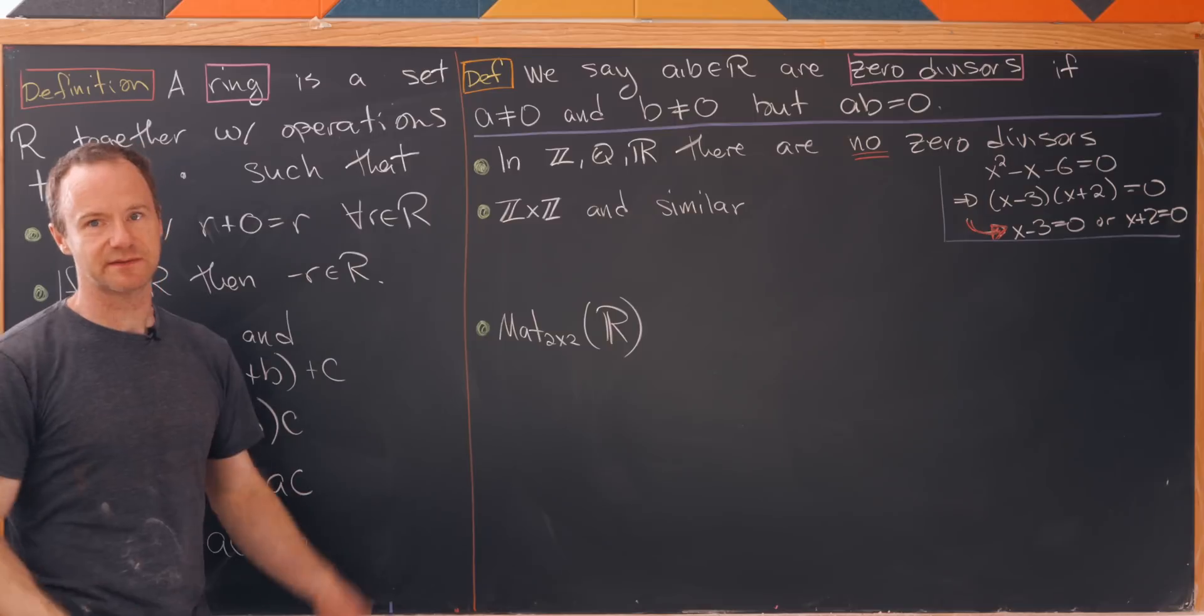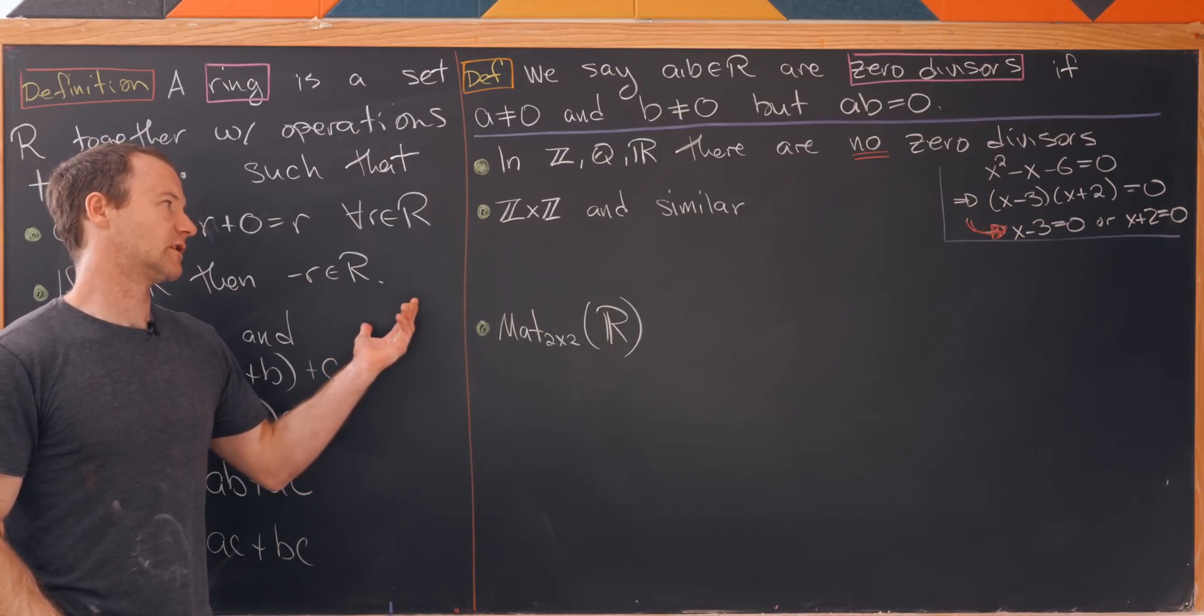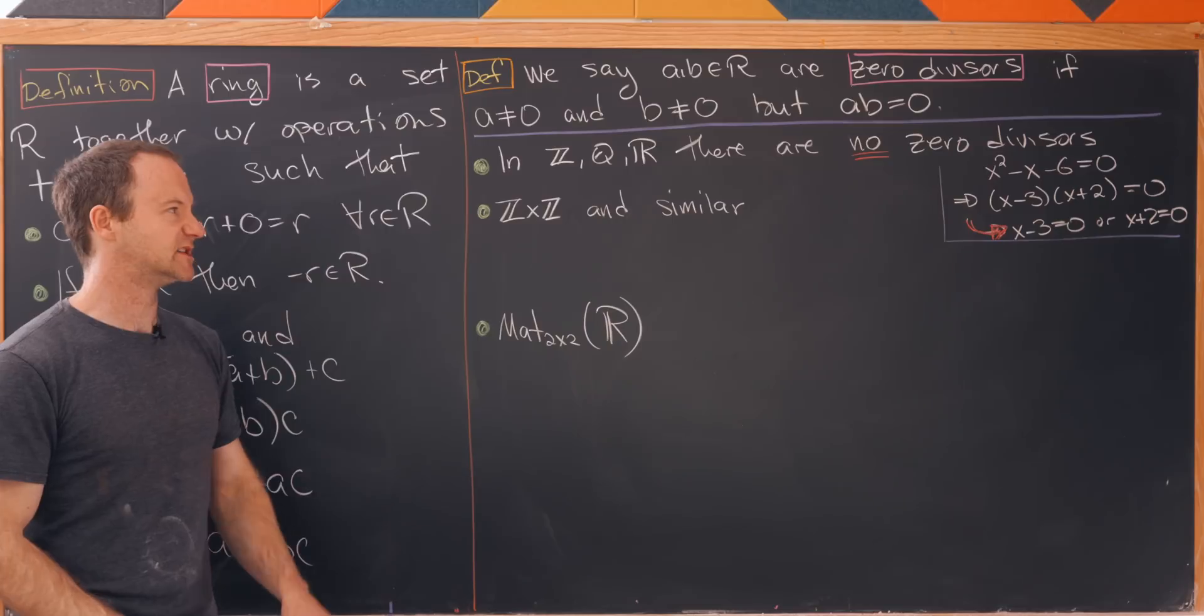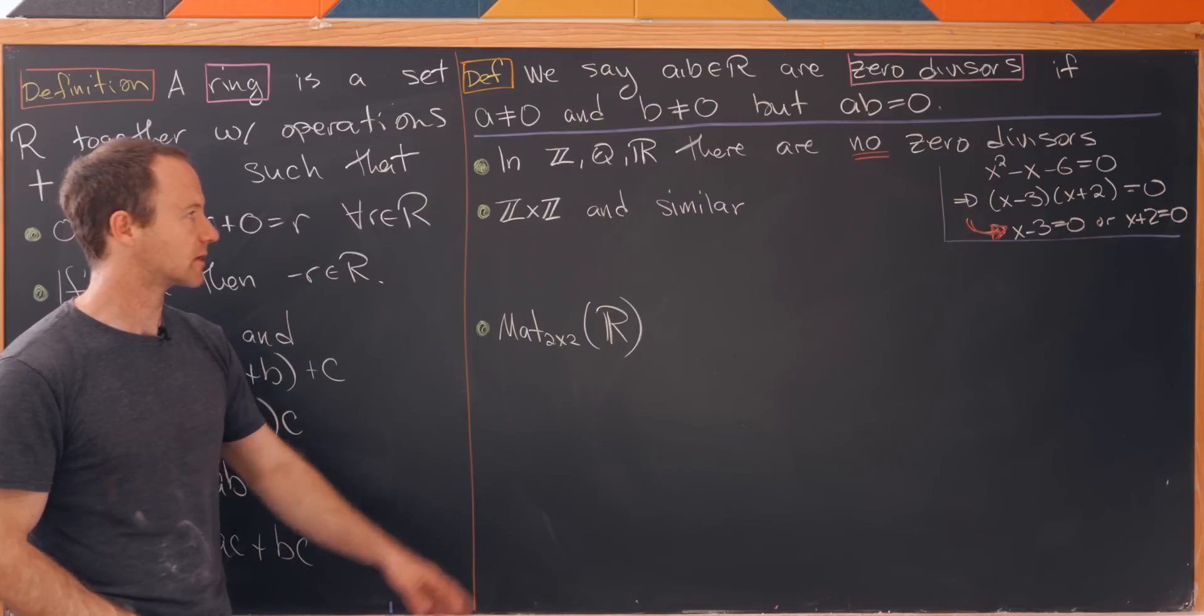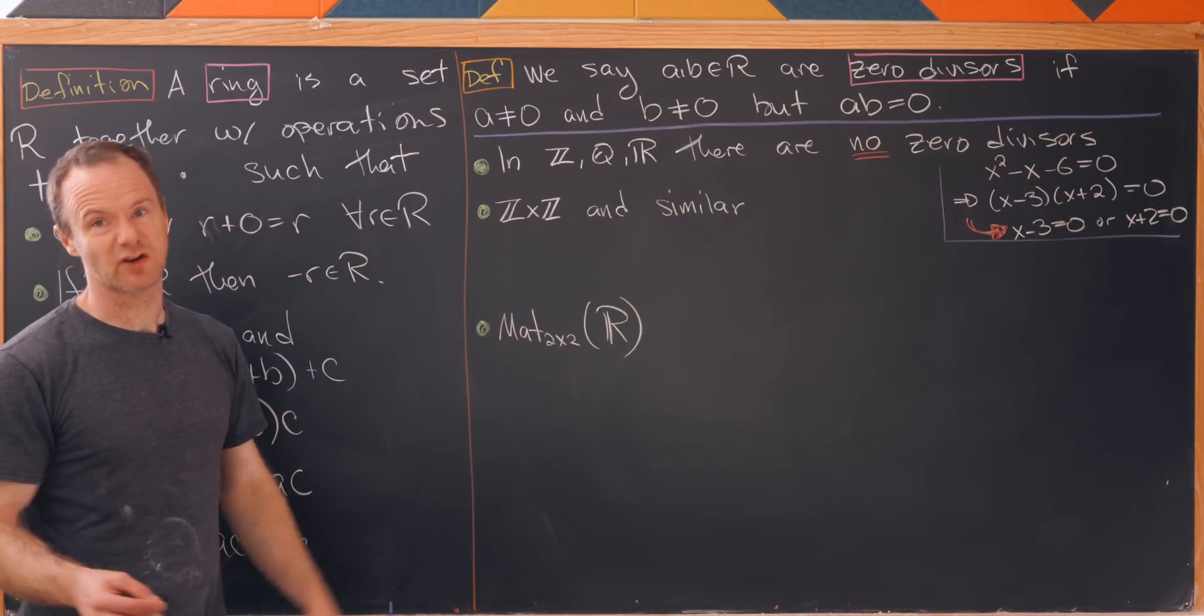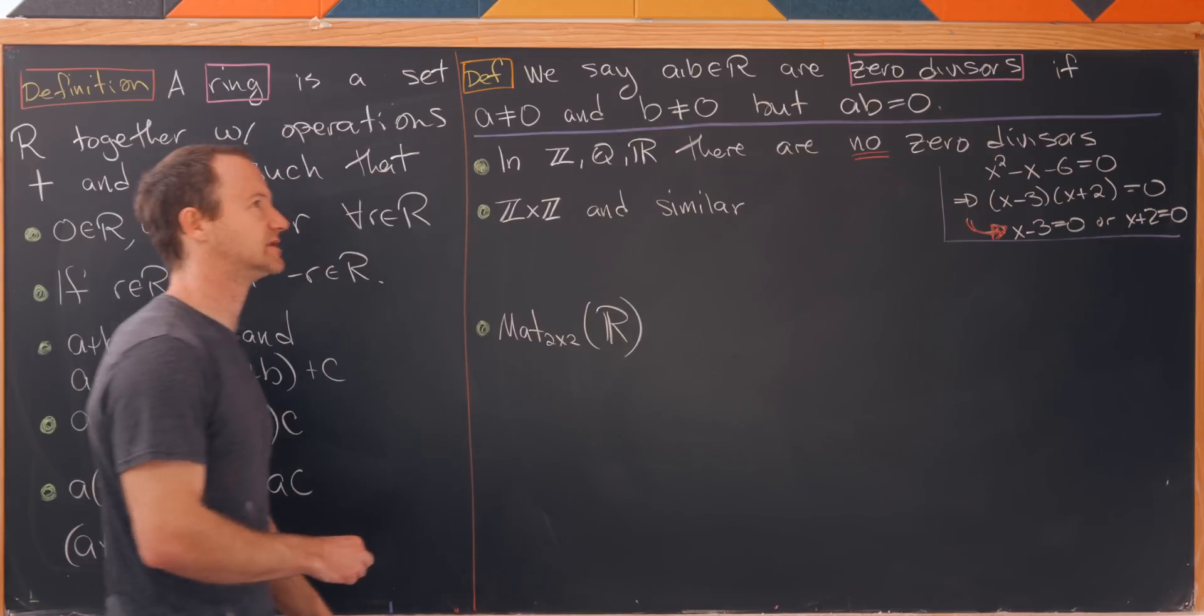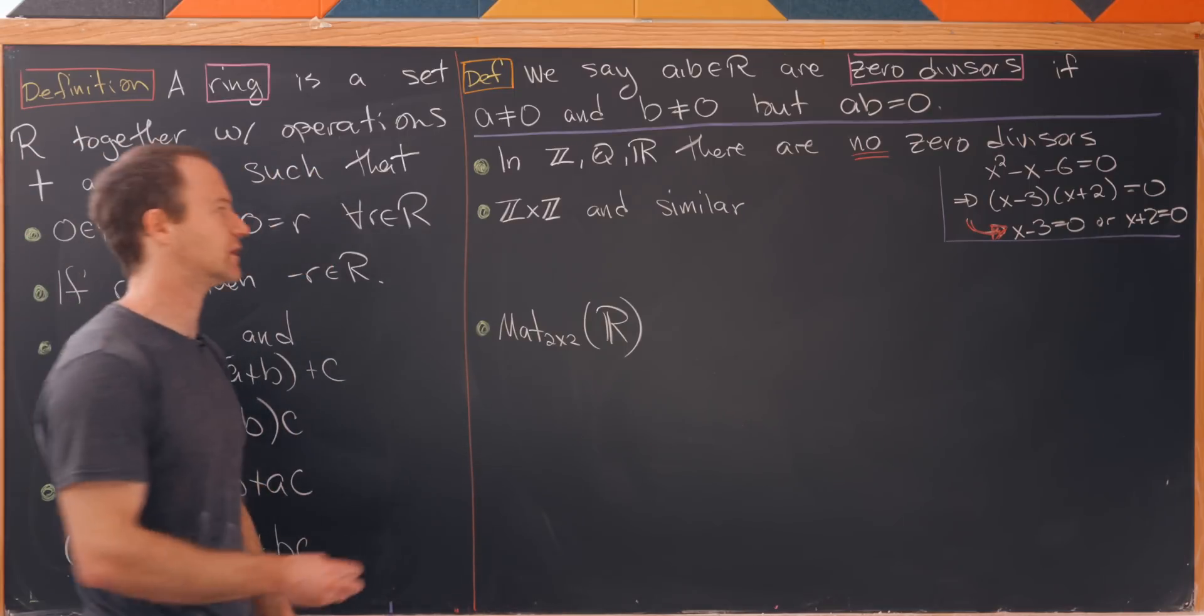And now let's look at some examples of zero divisors. So maybe one classic example would be Z cross Z and things that are similar. So you could have like Q cross Q, R cross R, maybe Z cross Q, things like that. It's easy to find zero divisors here because the multiplication is component wise.